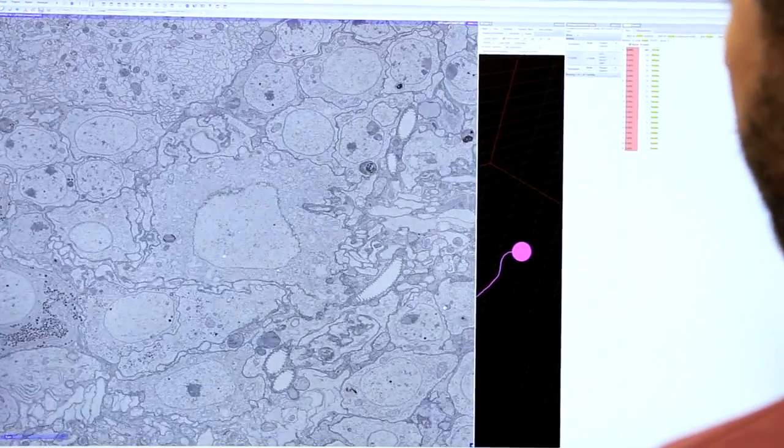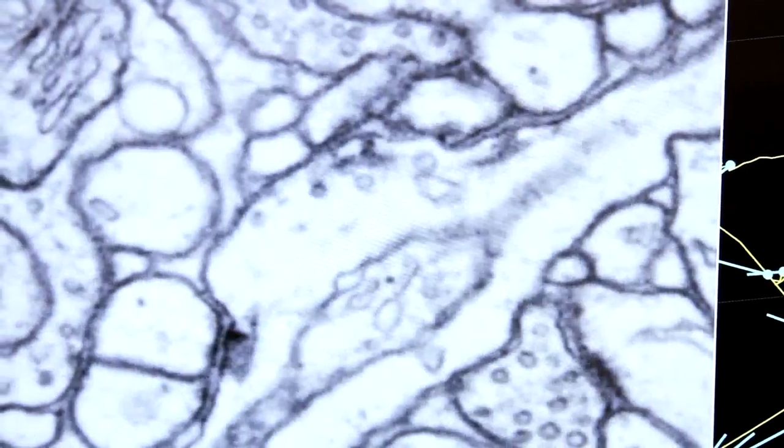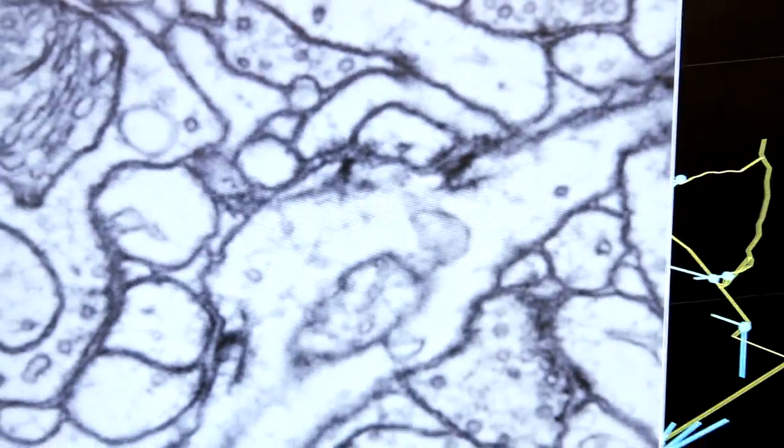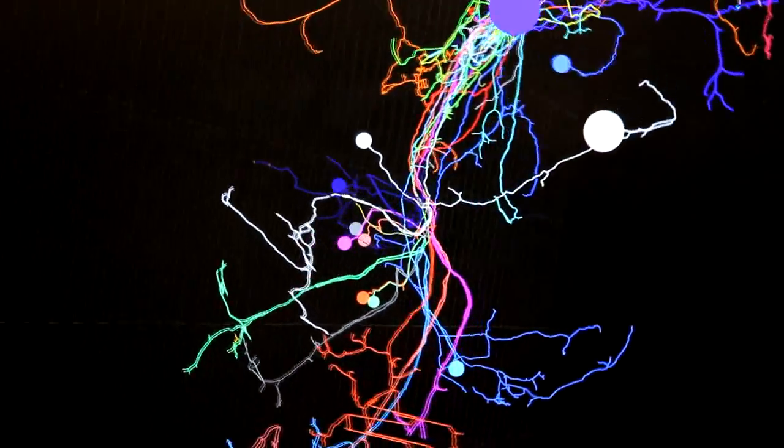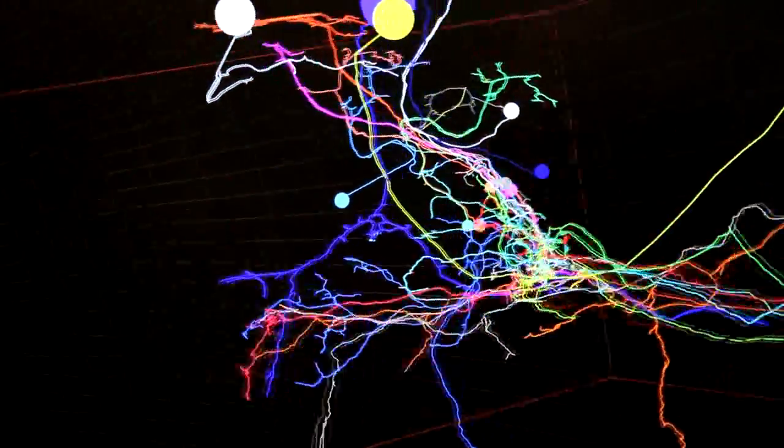DAVI has created an EM data set that gives us a new resolution at which we can look at individual neurons and where we can actually see chemical synapses, which tells us which neurons are talking to each other. This is the way that we can go in and get a connectome for our neural circuits.